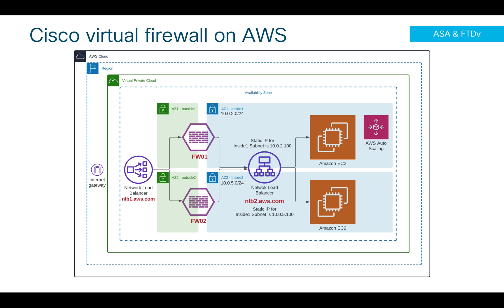On the right-hand side I have firewall one and firewall two. These firewalls are deployed in different availability zones within a single VPC, and on the left side of my firewall I have nlb1.aws.com — that's my internet-facing NLB.